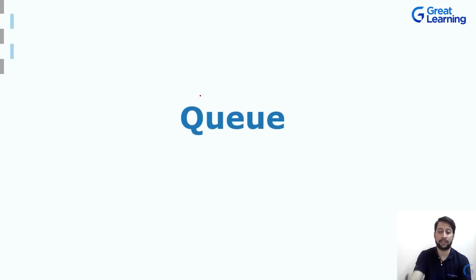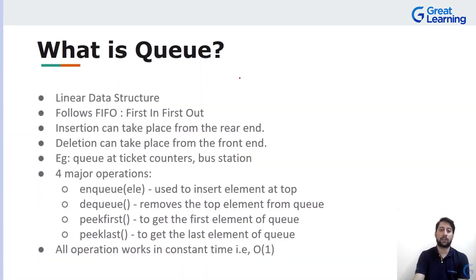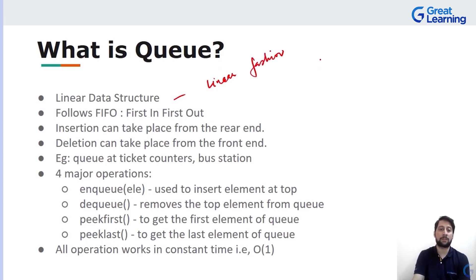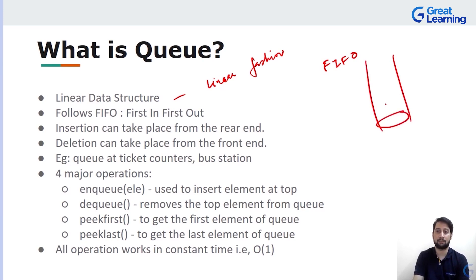Let's try to understand queue as a linear data structure. Queue is a linear data structure, meaning all the elements in the queue are stored in a linear fashion. It follows the principle of FIFO, meaning there is a restriction that whatever is the first item in is the first item to be out.